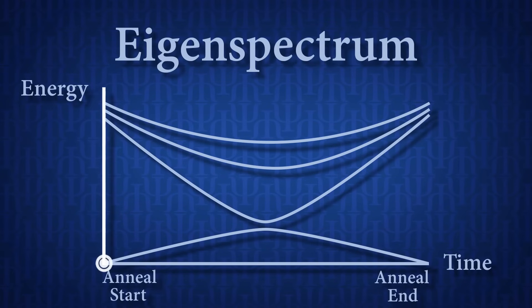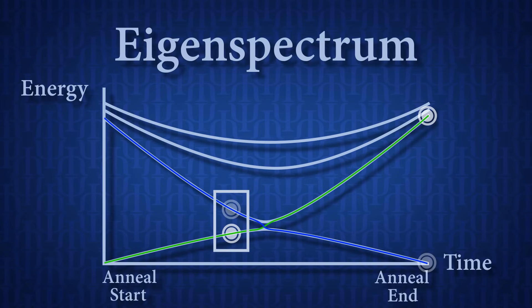So one way of getting information about the state of the system at some point during the anneal is to anneal at the normal speed for a certain amount of time and then suddenly speed up the schedule to the end. And what this does is it freezes the dynamics of the qubits at the point at which you speed it up. So the probabilities you see at the end of the anneal of the qubits being in the zero or one state reflect the probabilities at that point at which you sped up the anneal.